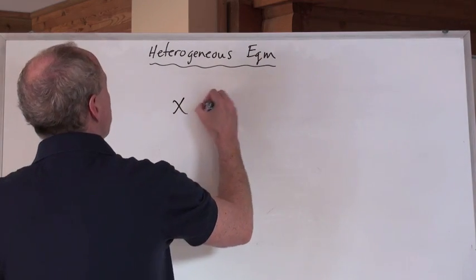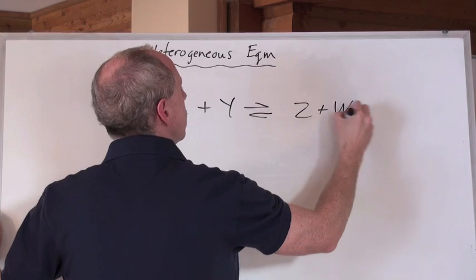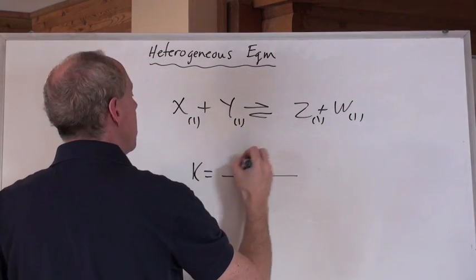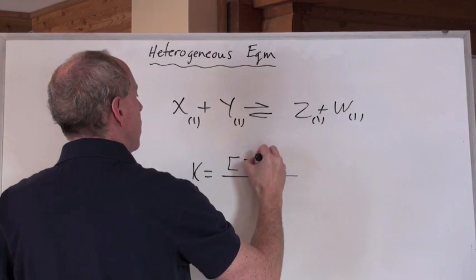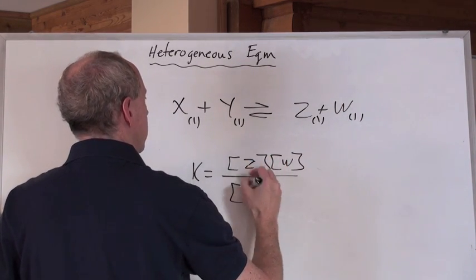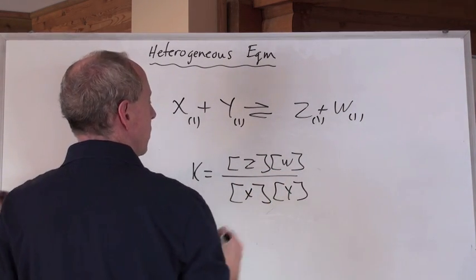You might be given X plus Y is in equilibrium with Z plus W and you've got four liquids. Well, how do you write the expression here? They all get put into that numerical expression here. This is what happens.